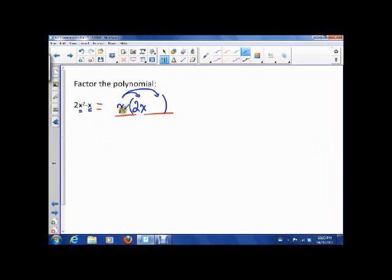Now the question is what do I need to multiply x by to get negative x? And you should come up with the answer. That's negative 1. So there's our next answer. So we could say the factors of 2x squared minus x are x and 2x minus 1.